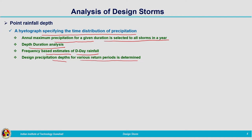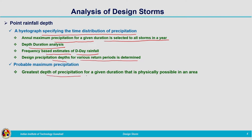For very important structures such as dams, where failure would cause huge losses, we use probable maximum precipitation. A 50-year or 100-year return period may give a value lower than probable maximum precipitation. We do not prefer to use probable maximum precipitation in all cases because the design would not be economical, but in some cases it cannot be avoided. Probable maximum precipitation is the greatest depth of precipitation for a given duration that is physically possible in an area.